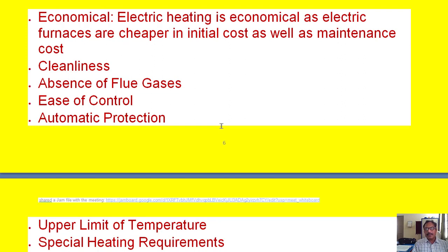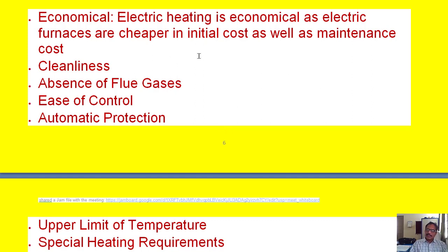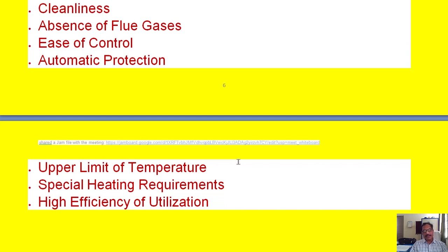There is automatic protection with electric equipment — circuit breakers and fuses handle protection. Also, there is an upper temperature limit setting; once the temperature reaches that limit, the power supply is automatically cut off and the environment is kept safe.